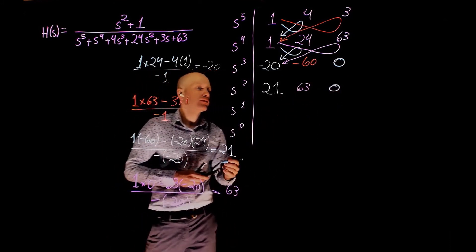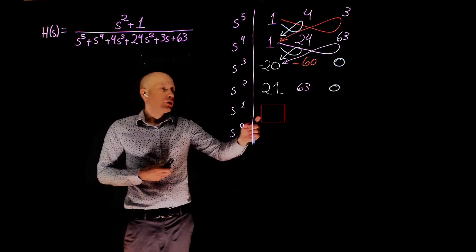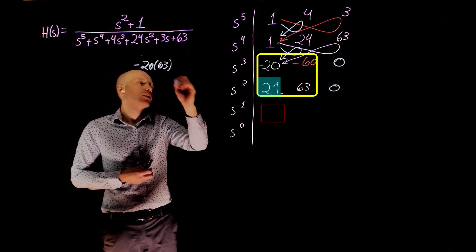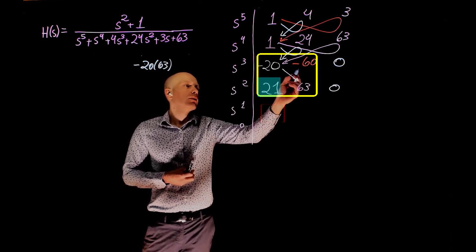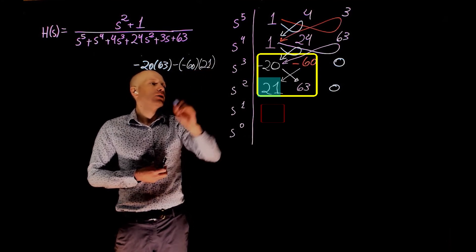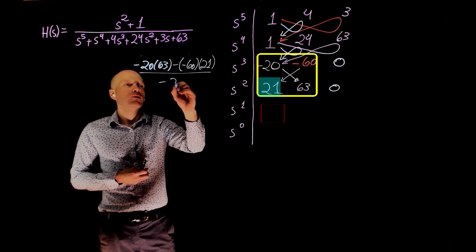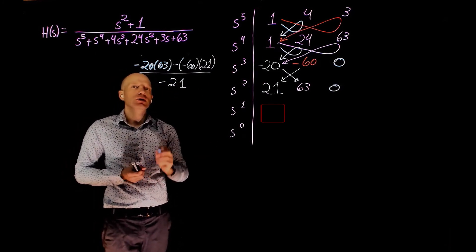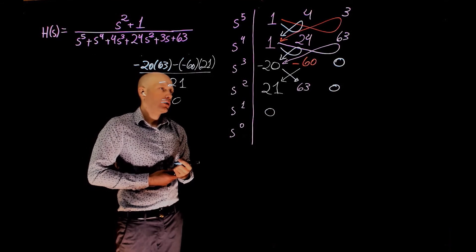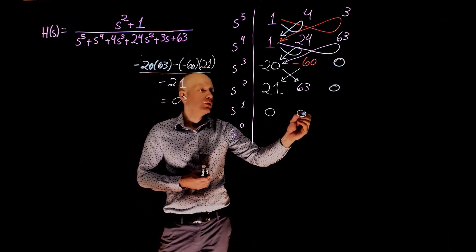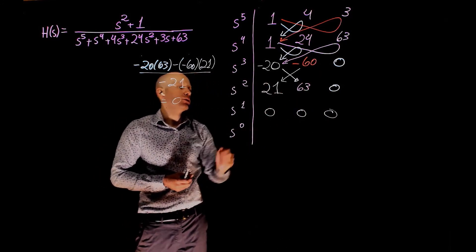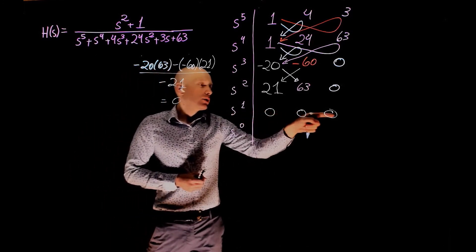Now to determine the next element, we use these four: negative 20 times 63, minus negative 60 times 21, divided by negative 21. This turns out to be 0. The next elements are also all 0 — 20 times 0, 0 times 21 — it's all zeros. So we now have an entire row of zeros.